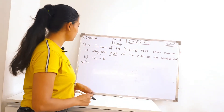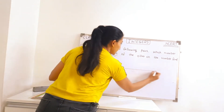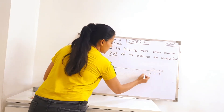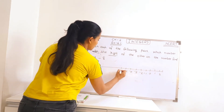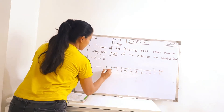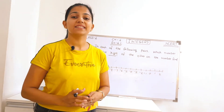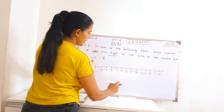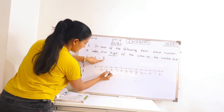Now we move to part B. In this part, two numbers are given: minus 3 and minus 8. First of all, we will draw a number line again. Negative integers should always be on the left side of the number line. So here we need to check between minus 3 and minus 8 which number is on the right side. Let's check — where is minus 3? Minus 3 is here. And minus 8 is here.